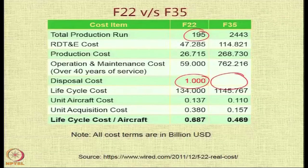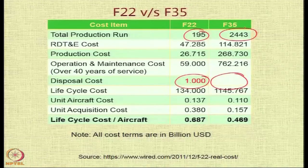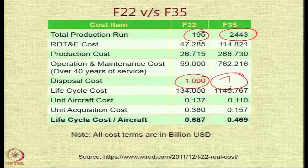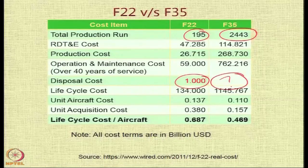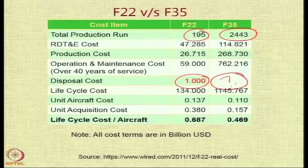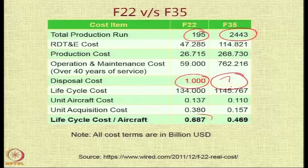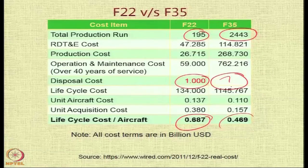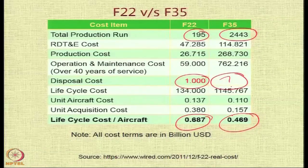For the F-35, the original planning was to produce 2,443 aircraft, and there is currently no idea what will be spent in their disposal. If the disposal cost is ignored, the life cycle cost of the F-22 comes to around 0.7 billion USD per aircraft, as against 0.46 billion USD for the F-35.